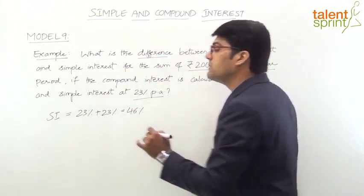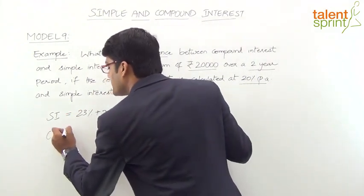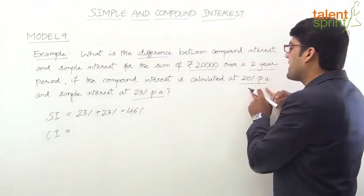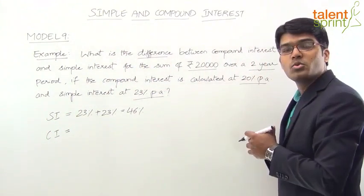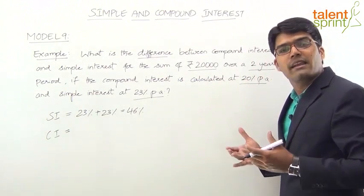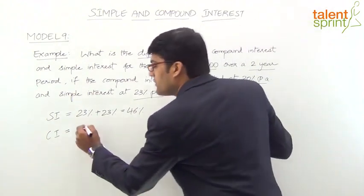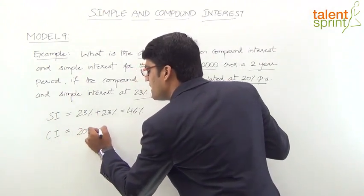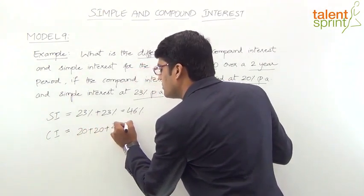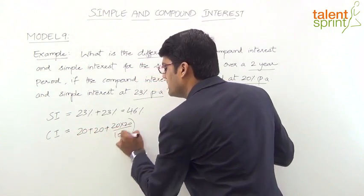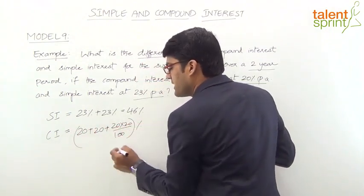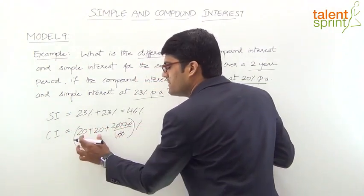Compound interest calculate. Compound interest rate is 20% per annum and time period is 2 years. Compound interest rate is how to calculate: A plus B plus AB by 100. Compound interest is 20 plus 20 plus 20 into 20 by 100. This is the total rate of interest. If you simplify it, 0 is cancelled, 20 plus 20 is 40, 2 into 2 is 4, 40 plus 4 is 44%.